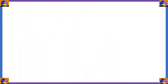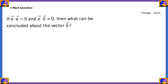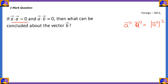Now let's move on to the final question. If a bar · a bar = 0 and a bar · b bar = 0, then what can be concluded about vector b bar? Notice that a vector having a dot product with itself gives the square of its magnitude. So a bar · a bar = modulus of a bar squared.